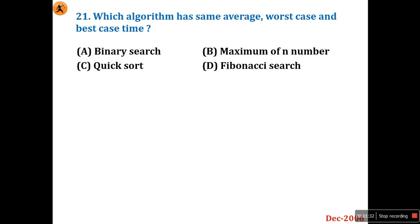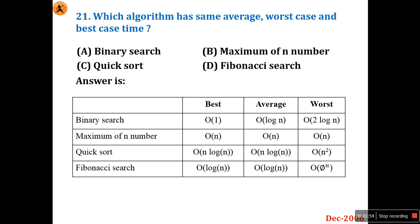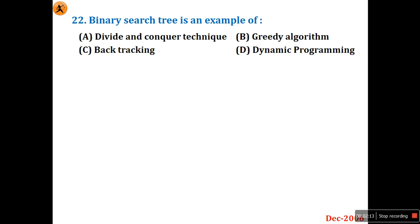For finding the maximum of n numbers, this is the case where it will always take O(n) time. Every time, even if the first element is the maximum, you still have to compare it with all remaining elements. Whether the maximum is at the first, middle, last position, or not present at all, you must search all n elements. That's why maximum of n numbers has the same time complexity in all cases.